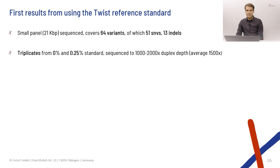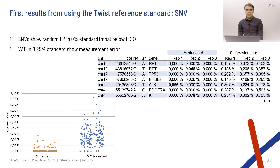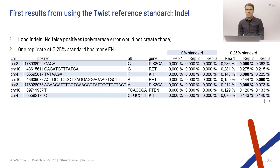Let's look at some data. For single nucleotide variants, in the 0% standard there are a few false positives, but they are at very low allele frequencies. In the 0.25% standard there is quite some noise — this is expected at these low allele frequencies with this coverage. Looking at indel variants, the longer indels show no false positives, which makes sense because such an error does not appear at random.